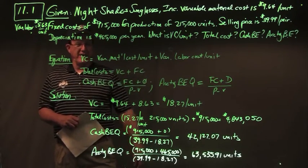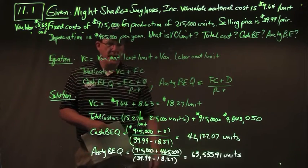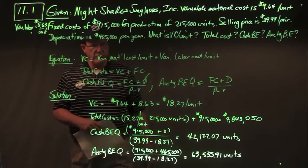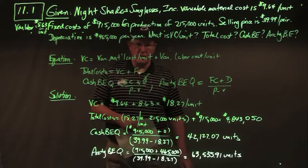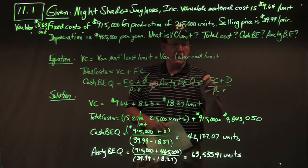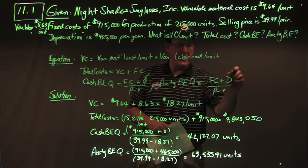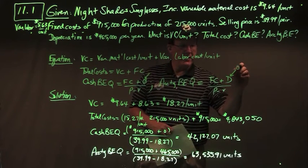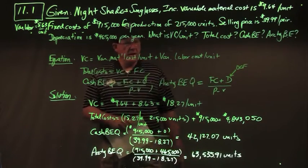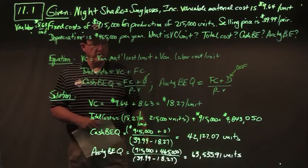Cash break-even quantity is fixed cost plus OCF over P minus V. OCF at the cash break-even is zero, so it's fixed cost plus zero over contribution margin. Accounting break-even quantity is fixed cost plus OCF over P minus V, where OCF at the accounting break-even equals depreciation — so fixed cost plus depreciation over contribution margin.